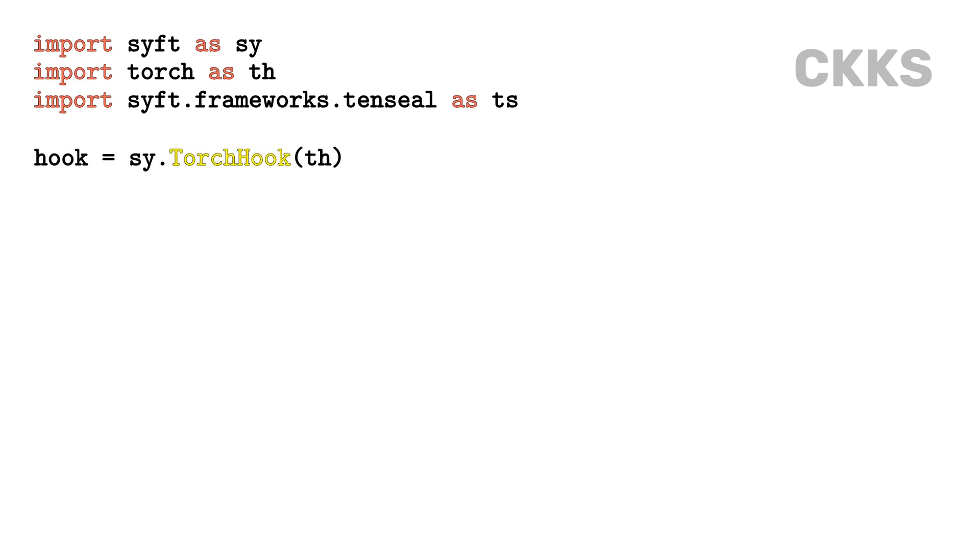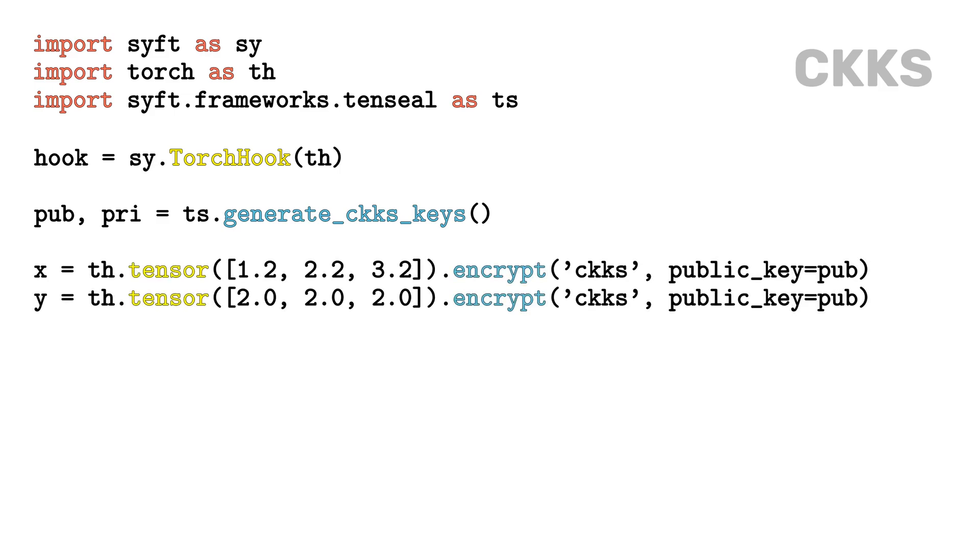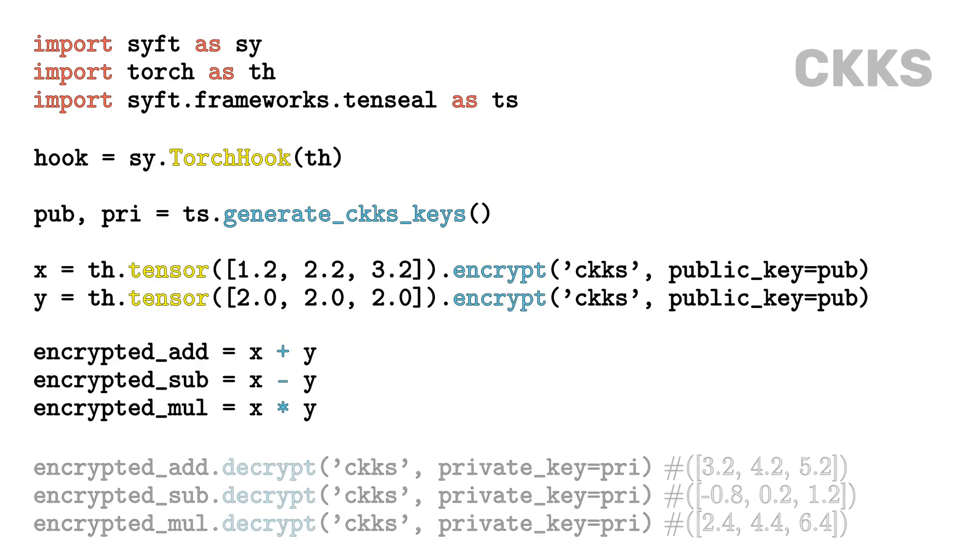Using CKKES will be only slightly more complex. Besides Syft and Torch, we will have to import a Python wrapper of the SEAL library from Microsoft that implements the scheme in fast C++ code. Then we will proceed by hooking Torch, generating the keys and initializing the encrypted tensors. Syft, at first, will support efficient addition, subtraction, and multiplication on CKKES tensors, although the scheme is not limited in the operation it enables.